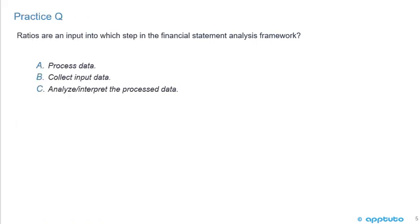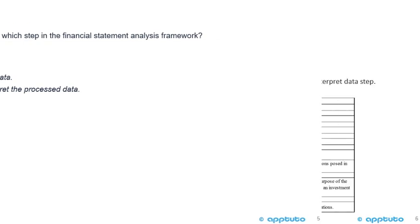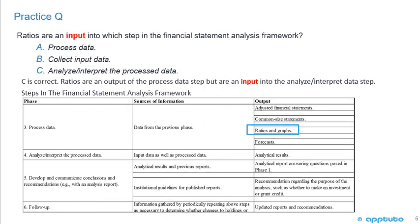We'll finish this LOS with a quick practice question to check our understanding. Ratios are an input into which step in the Financial Statement Analysis Framework? A, process data; B, collect input data; or C, analyze and interpret the processed data.